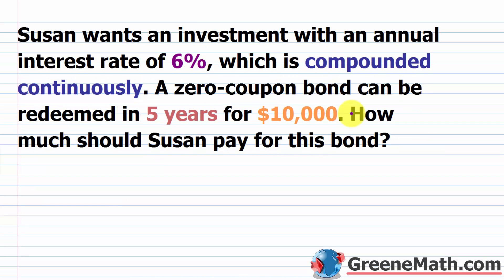All right, let's take a look at one more problem. Again, this is super simple. So Susan wants an investment with an annual interest rate of 6%, which is compounded continuously. A zero coupon bond can be redeemed in five years for $10,000. How much should Susan pay for this bond? So first and foremost, let me explain this zero coupon bond. In case you've never taken a finance course before, basically these trade at a discount. So they don't pay any interest. You're not getting any payments while you own the bond. You basically just get a discount to the price that you're going to get at the end.